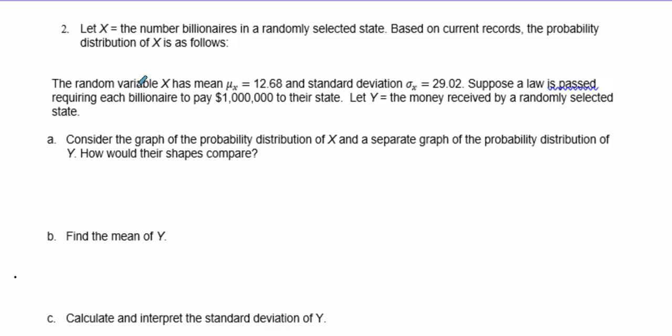We'll talk about transformation of probability distributions, example number two. Let X be the number of billionaires in a randomly selected state. Based on current records, the probability distribution of X has a mean of 12.68 billionaires and a standard deviation of 29.02. Suppose a law is passed requiring each billionaire to pay $1,000,000 to their state.